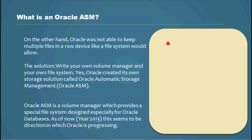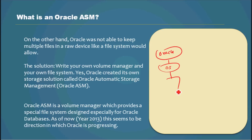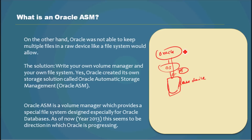On the other hand, Oracle was not able to keep multiple files in a raw device the way a file system would allow. If Oracle was configured to directly access a raw device, it would skip the file system, but then it could only use the entire area for a single file. So if Oracle wanted to keep multiple database files, it needed multiple raw devices.